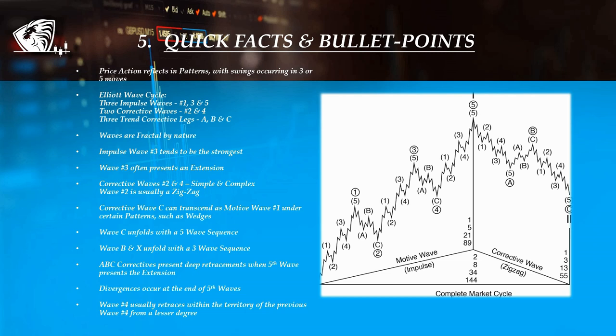These waves, as the name implies, they correct the impulsive 1 and 3. All this is followed by the trend corrective legs, which are A, B and C.